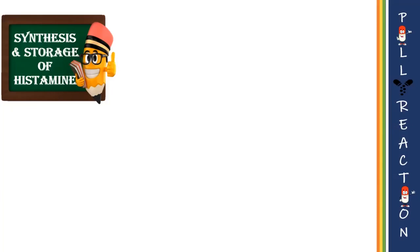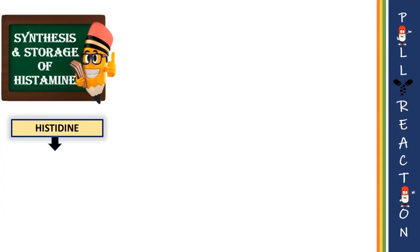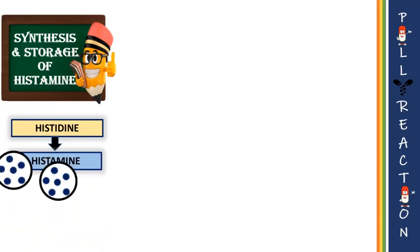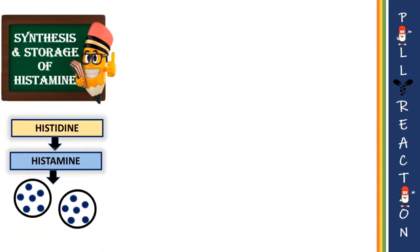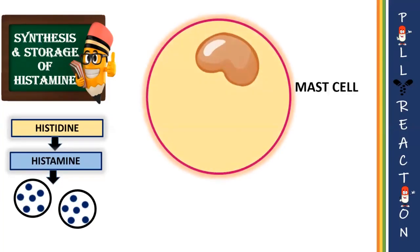Histamine is synthesized locally from the amino acid histidine. Histidine, in the presence of histidine decarboxylase, gets converted to histamine — a potent biological amine which is highly positively charged.